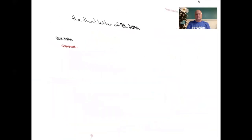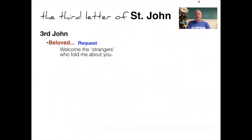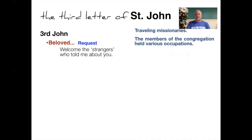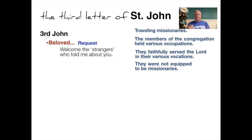John makes a request: welcome the strangers who told him about Gaius. These were traveling missionaries. The members of the congregation held various occupations and faithfully served the Lord in their vocations but were not equipped to be missionaries. There was a formal position of missionary — specifically trained or called to go out and share the gospel. Everyone was given the charge to share, like Priscilla and Aquila who were tentmakers but always looking for opportunities to share their faith.